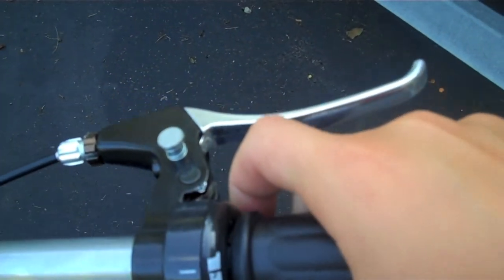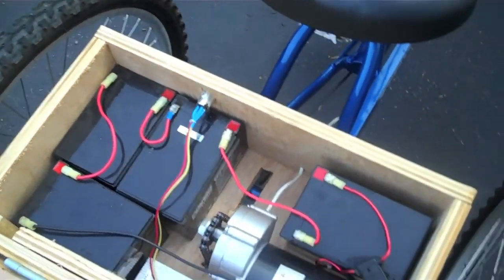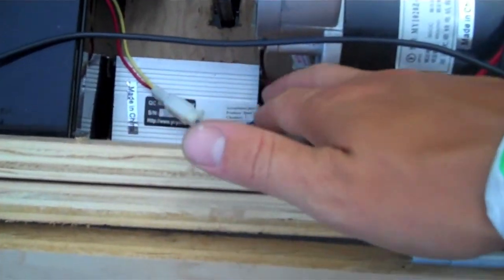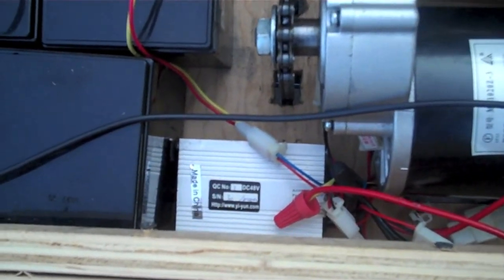And then here we have twist throttle, just a simple thumb throttle. And all these components are hooked together through this motor controller. It's just screwed into the bottom here. It's 48 volts at a thousand watts.